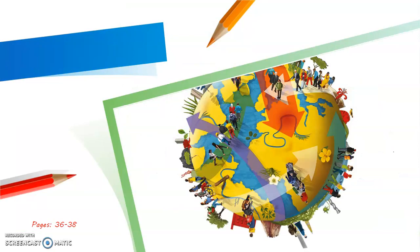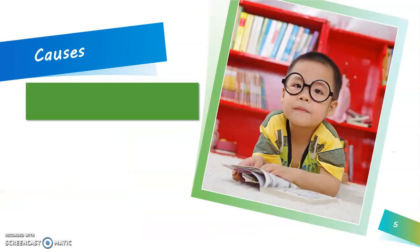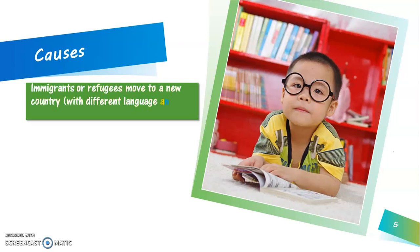Immigration is the movement of a person from one country to another — from their homeland to a new country where they decide to settle and live. Let's begin by thinking about the causes of immigration. What would push a person to move from their home and land to a foreign new country to settle and live there for a long period of time or until the end of their lives?